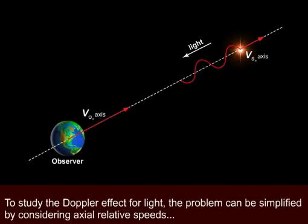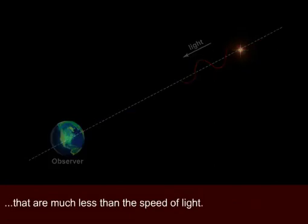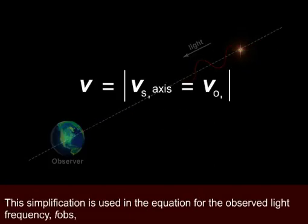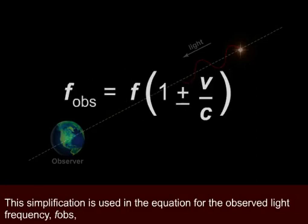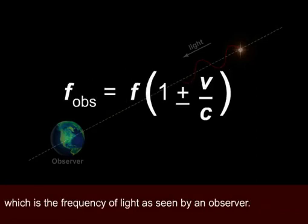To study the Doppler effect for light, the problem can be simplified by considering axial relative speeds that are much less than the speed of light. This simplification is used in the equation for the observed light frequency, f_observed, which is the frequency of light as seen by an observer.